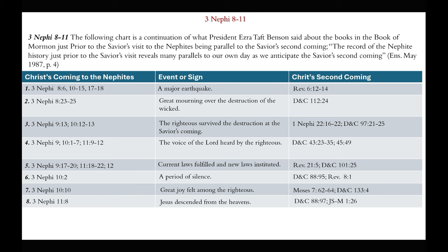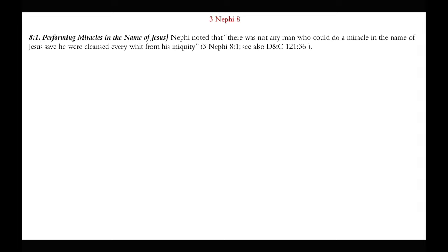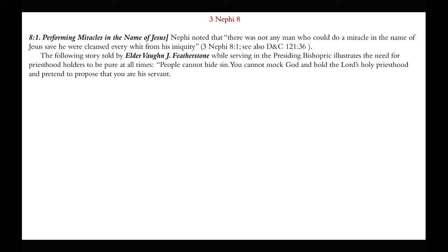So there are some of the events or signs that did happen in the Book of Mormon that parallel what will happen prior to Christ's second coming. Now let's turn our attention to 3rd Nephi, chapter 8, verse 1. Nephi noted that there was not any man who could do a miracle in the name of Jesus, save he was cleansed every whit from his iniquity. The following story told by Elder Vaughn J. Featherstone while serving in the presiding bishopric illustrates the need for priesthood holders to be pure at all times.